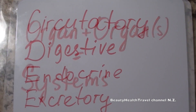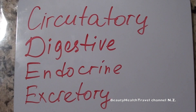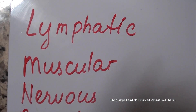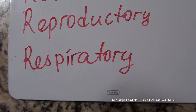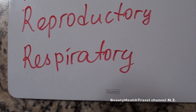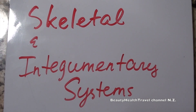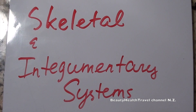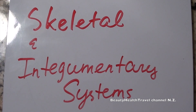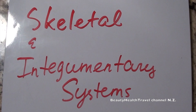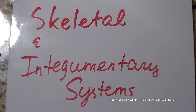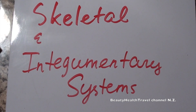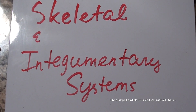We have circulatory, digestive, endocrine, excretory, lymphatic, muscular, nervous, reproductive, respiratory, skeletal, and integumentary systems. I put the skeletal and integumentary at the end because with cosmetology, we study more skeletal, integumentary, the muscular system, also the lymphatic, and circulatory and nervous system more.